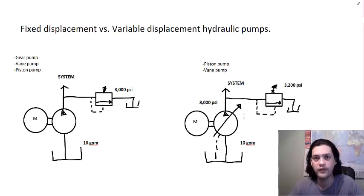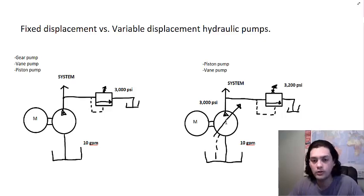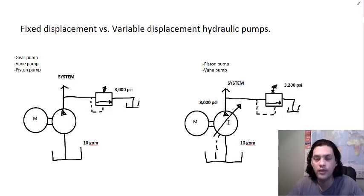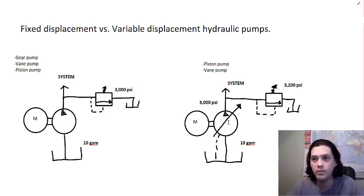In a case like that, you set up a variable displacement pump. Through the pressure compensator on the pump, you set the maximum pressure — let's say 3,000 PSI. The pump keeps pumping oil when below that setting, and when it reaches 3,000 PSI, it destrokes the pump to zero displacement and stops pumping more oil into the system, while maintaining the pressure. You read 3,000 PSI in the pressure line but you're not pumping more oil.